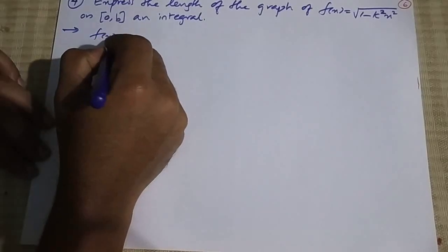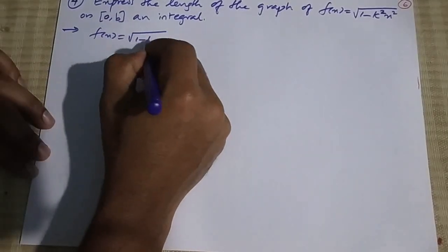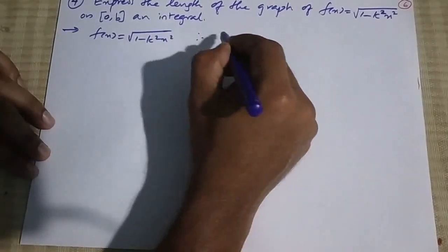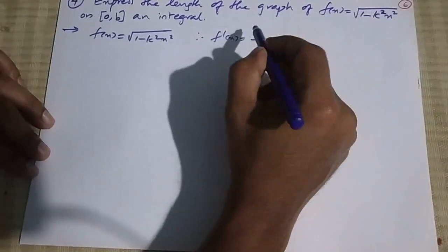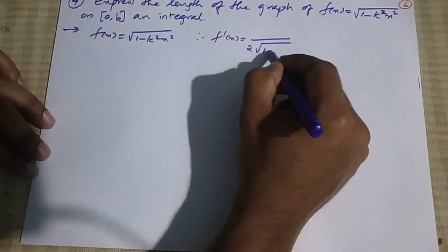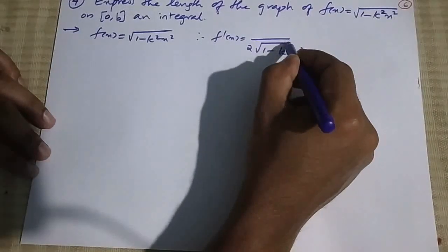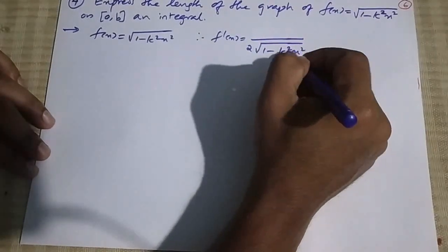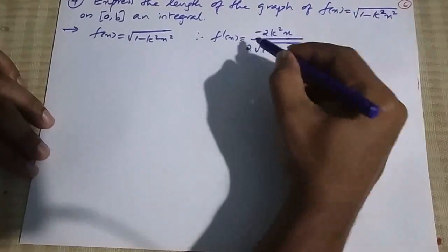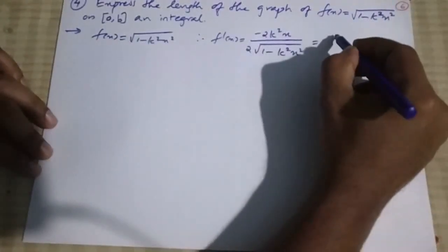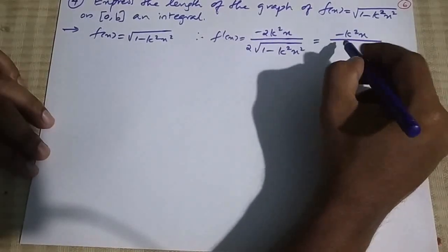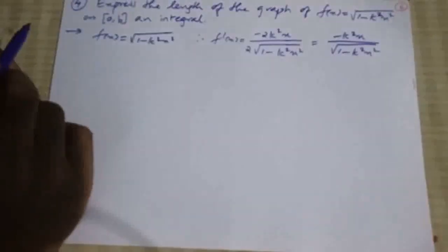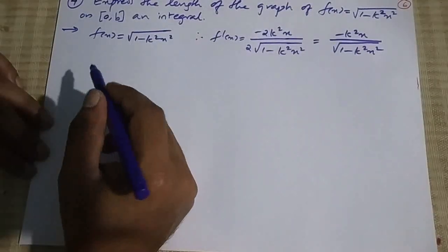We have f(x) = √(1 - k²x²), so therefore f'(x) is 1/2 times 1/√(1 - k²x²) times the derivative of the inside, which is -2k²x, giving f'(x) = -k²x / √(1 - k²x²).